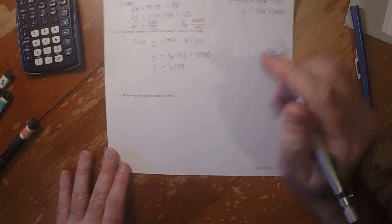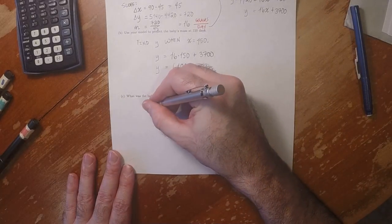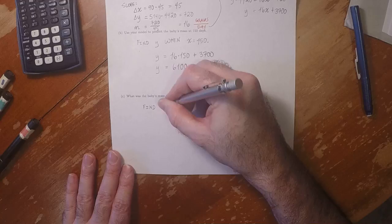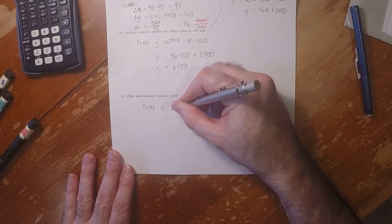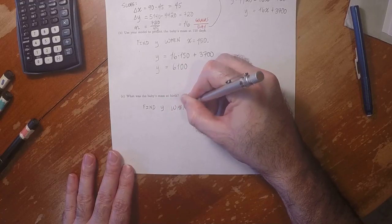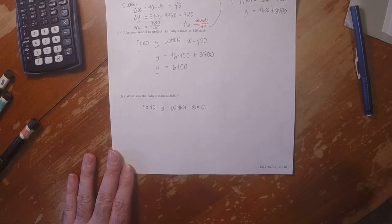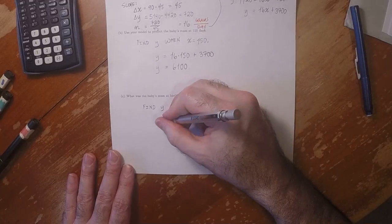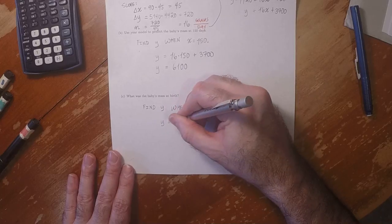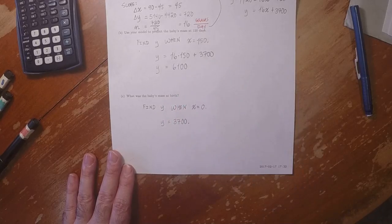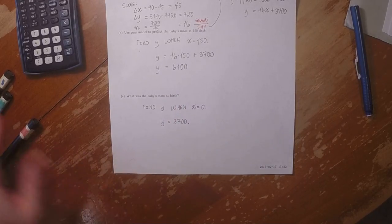And what was the baby's mass at birth? Which is to say find y when x is 0. Well, that's 3700. And that's the answer.